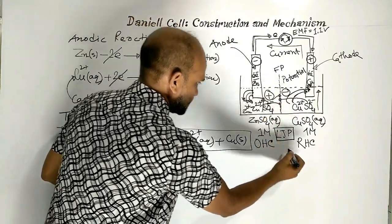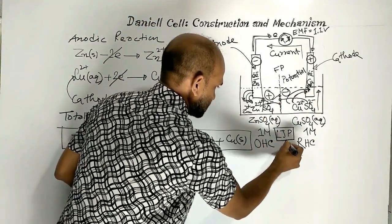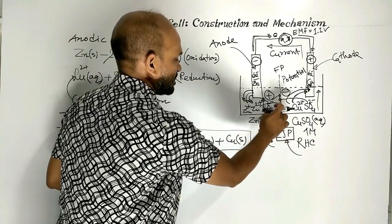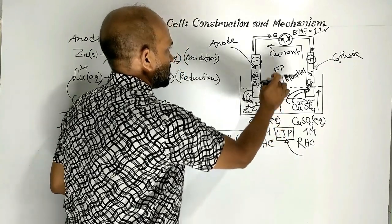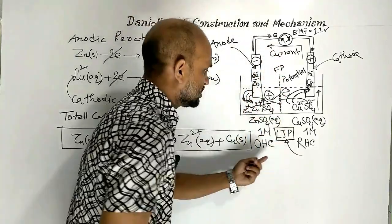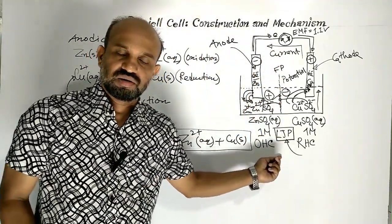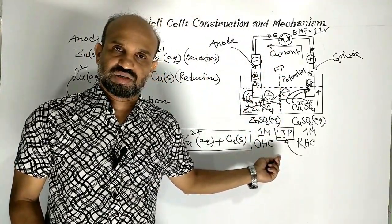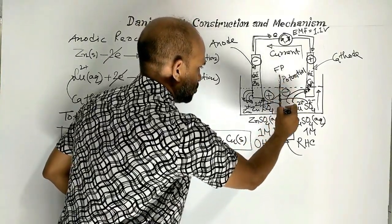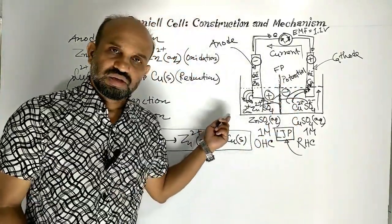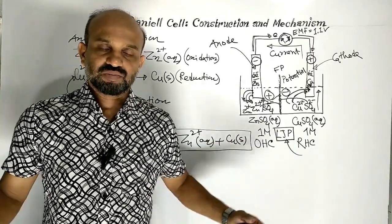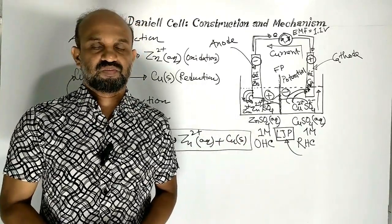Due to the liquid junction potential, this cell loses its power to produce electricity. The filter paper or porous membrane does not allow the two solutions to mix with each other, but it allows transfer of positive and negative ions between the two solutions to maintain electrical neutrality. Due to the creation of liquid junction potential, it cannot produce current spontaneously. To avoid this liquid junction potential, a salt bridge is used instead of a porous membrane in electrochemical cells.